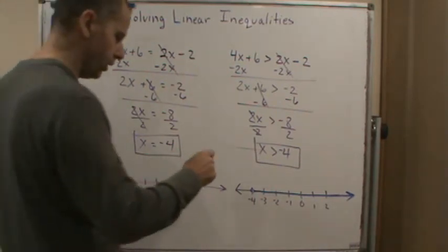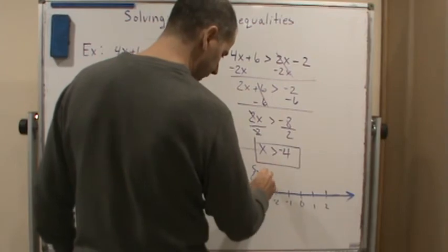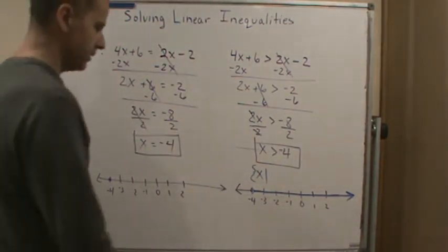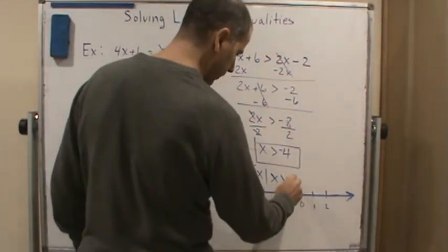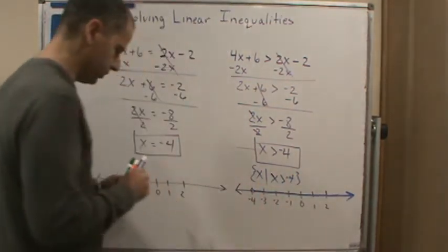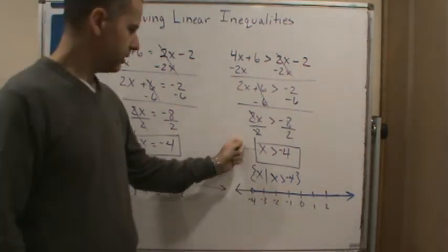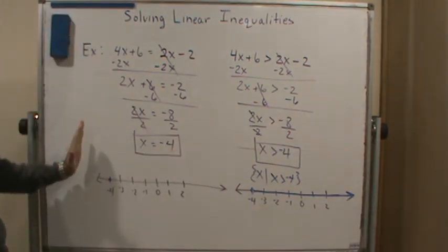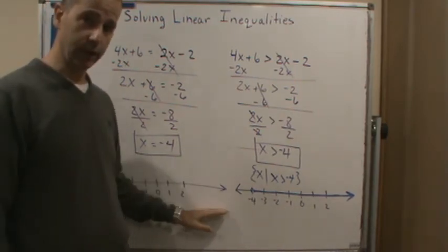Or, in other words, if I used set builder notation, it would say: I want the set of all values of x such that x is greater than negative 4. That's my solution.